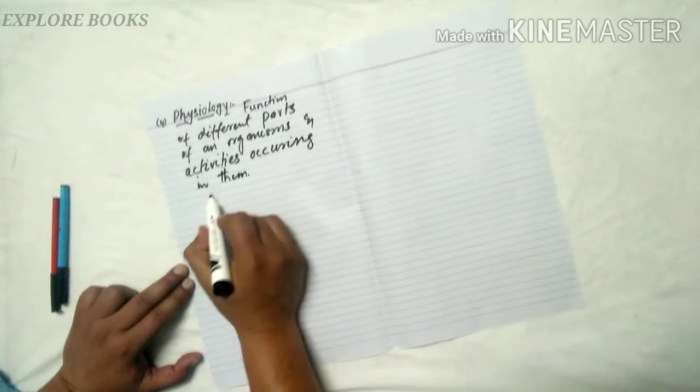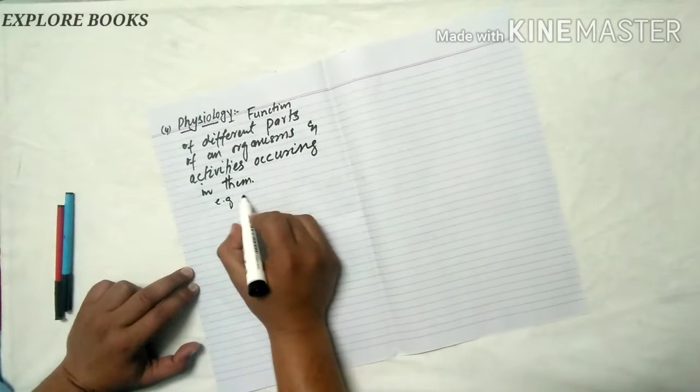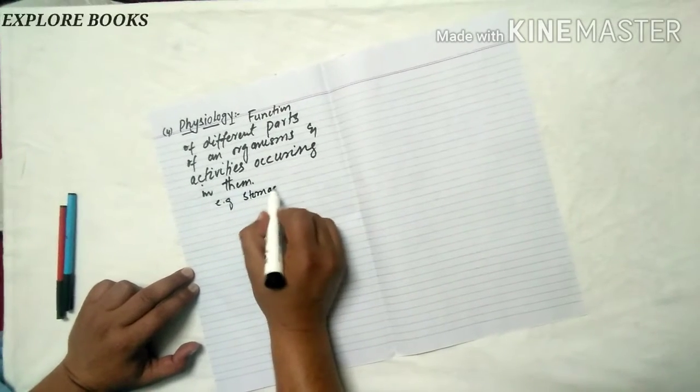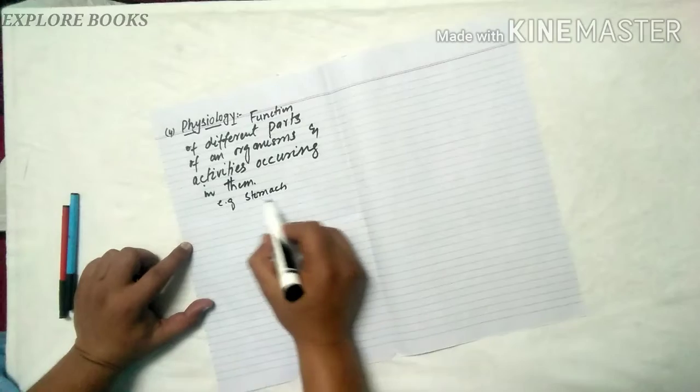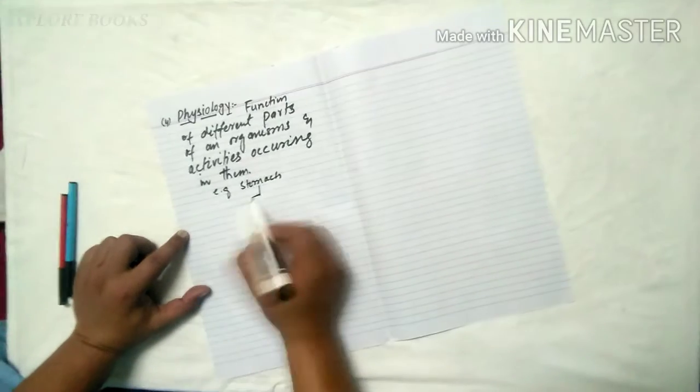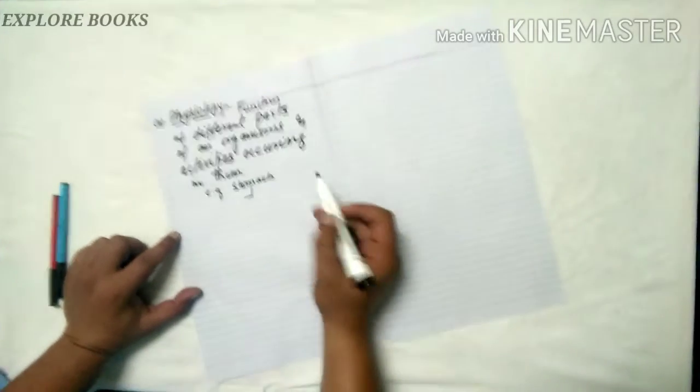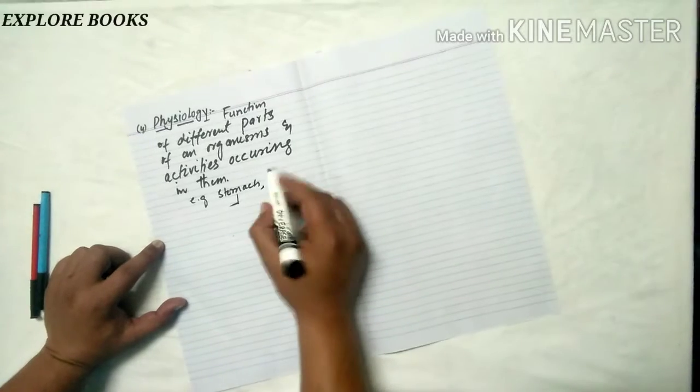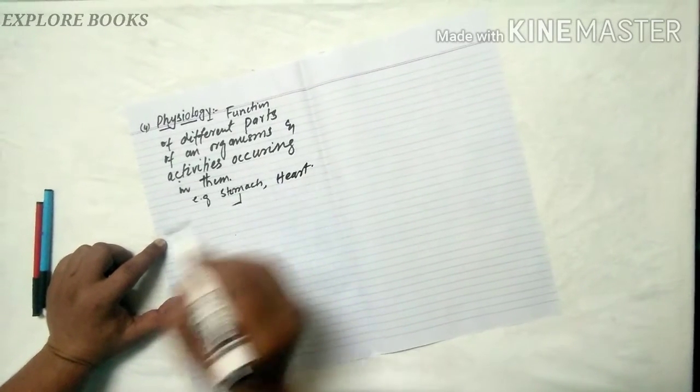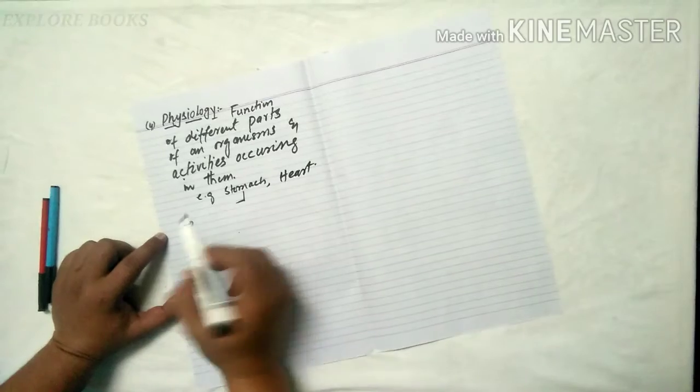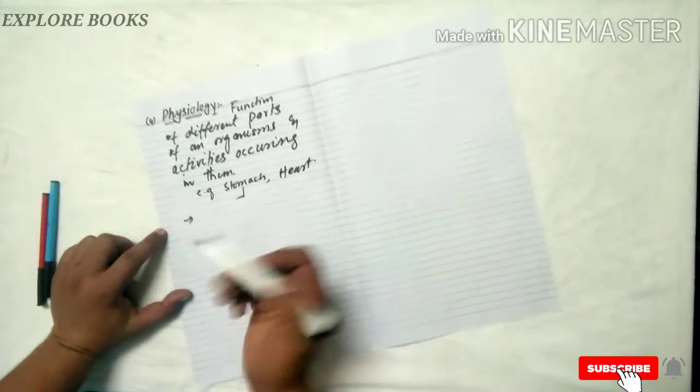Suppose, for example, if you are studying the heart of an organism, the processes and activities. Physiology is the function of different parts of an organism. The plant has the function of photosynthesis and respiration. That is physiology study.